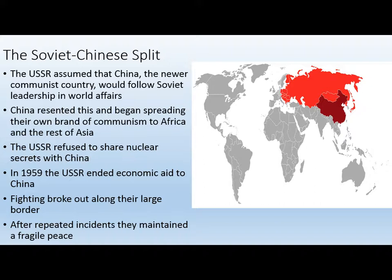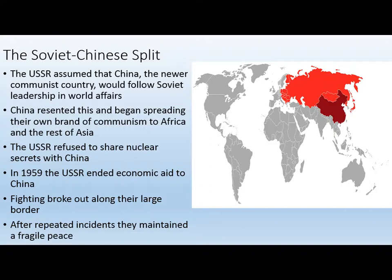The relationship gets worse. The Soviet Union refuses to share nuclear secrets with China, which wants its own bombs to become a superpower. The Soviet Union says no. In 1959, the Soviet Union officially ends economic aid to China. Shortly thereafter, fighting breaks out along the Chinese-Soviet border. Looking at the map — the dark red is China, the lighter red is the Soviet Union and the Warsaw Pact. Mongolia sits between them. There's a huge border between the two countries where they're fighting over territory. After repeated incidents, they establish a fragile peace, though fighting breaks out frequently.